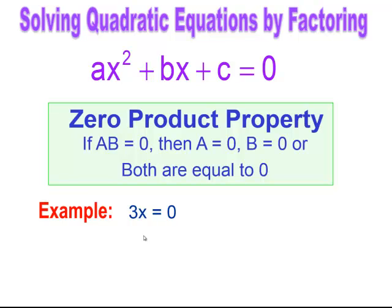We can always go back to solving equations. When we solve equations, we want to solve for the variable or isolate the variable. In this case, in order to isolate the variable, I would need to do the inverse operation of division. So I divide both sides by three and I would get the solution that x equals zero.